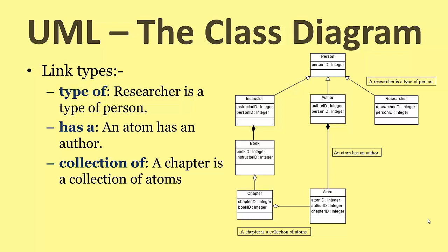So there are the three link kinds. There's the type of link type. So a researcher is a type of person. There's the has a link type. An atom has an author. And collection of. A chapter is a collection of atoms. And these three symbols are shown at the one end of the class diagram. If we're talking in entity relationship terms. We can now add the fields and the methods.